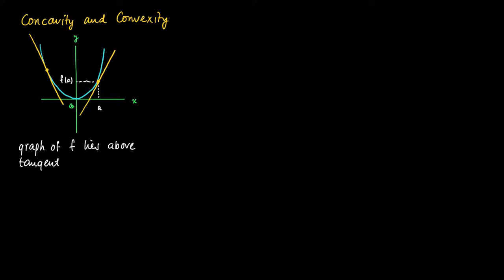And basically this holds for any point on the graph. If we look at the tangent line, then the tangent line is below the graph. So the graph of F lies above any tangent line. And in this case, if that is the case, we will call F convex.